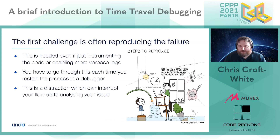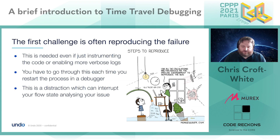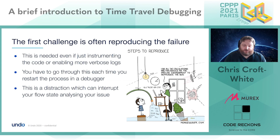When it comes to debugging, the first challenge is often to reproduce the failure — and sometimes this can be more difficult than you'd ideally want. This is needed whether you're instrumenting your code, enabling verbose logs, or using a debugger. Every time you try a hypothesis and it wasn't right, you've got to start again, going through the whole process. So not only do you have the distraction of driving your debugger, you've also got the distraction of reproducing the issue — meaning you're not spending your mental energy on analyzing what the bug is actually doing to find the root cause.